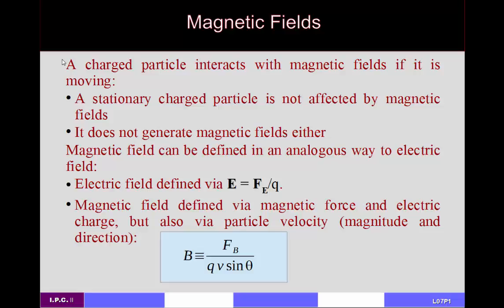A charged particle moving within a magnetic field can interact with the field by having a force applied to it. If the particle is uncharged, the magnetic field will have no effect. If the particle is stationary, regardless of charge, it will not be affected by the magnetic field. Furthermore, if the particle lacks either charge or motion, it will not generate any magnetic fields.